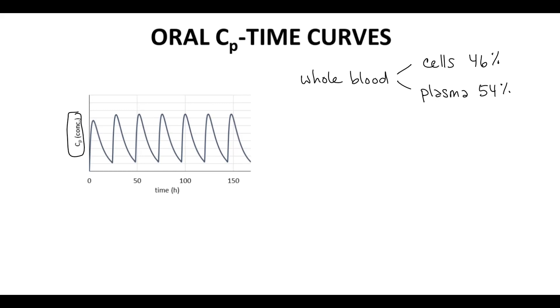Notice that the curve has peaks and valleys. This drug is taken once per day. Shortly after the drug is taken at time zero, the CP curve rises and then slowly falls until another dose is taken, and we get another rise and fall.